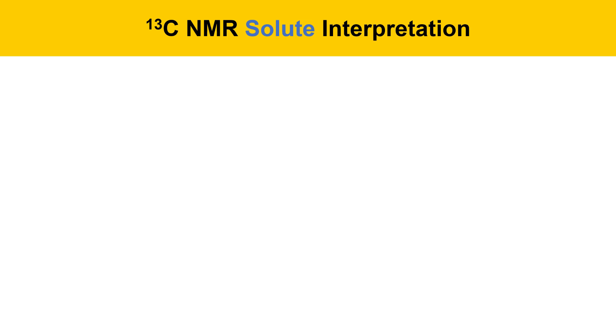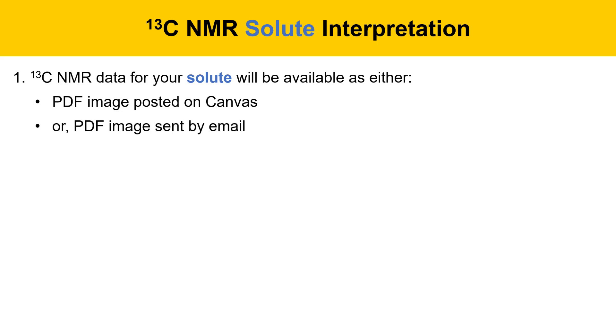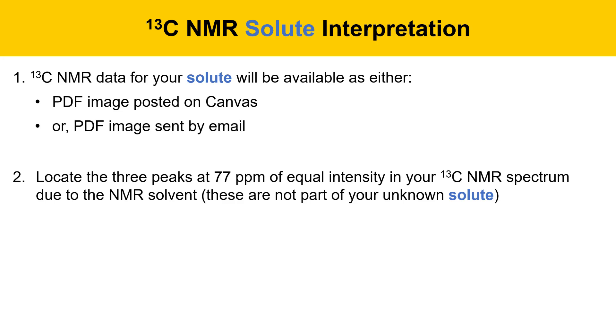Now we'll move on and talk about carbon-13 NMR solute interpretation. A copy of your C-13 NMR data for your solute will be available to you either as a PDF image posted on canvas or as a PDF image sent to you by email. You should locate the three peaks at about 77 parts per million of equal intensity in your carbon-13 NMR spectrum due to the NMR solvent, and just realize that these are not part of your unknown solute, they're due to the NMR solvent. You should assign the remaining peaks in your unknown solute's carbon-13 NMR spectrum to carbons in your molecule.